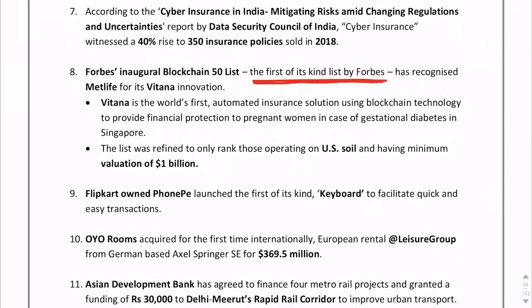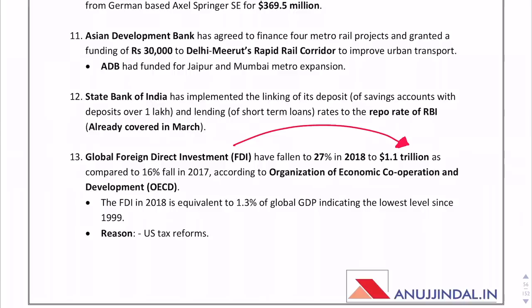The Forbes inaugural blockchain list is the first of its kind. Vitana is the world's first automated insurance solution using blockchain technology. As per global foreign direct investment figures, the amount is $1.1 trillion, which fell by 27% in 2018.